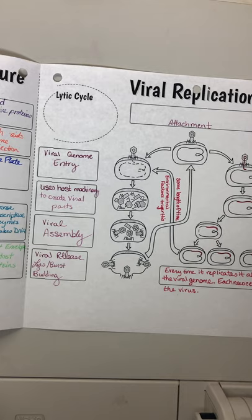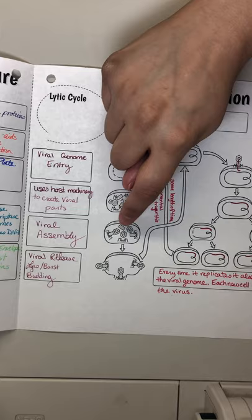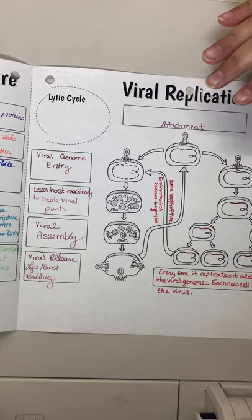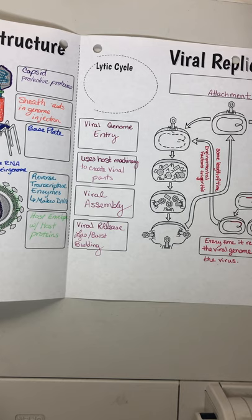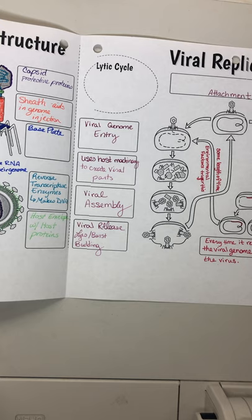Now that we've got all the parts, we're going to see it put together — viral assembly. Once they are created, they are released in two different ways. The cell could be overfilled with viruses and literally burst open, which kills the cell but releases a whole bunch of virus at one time.